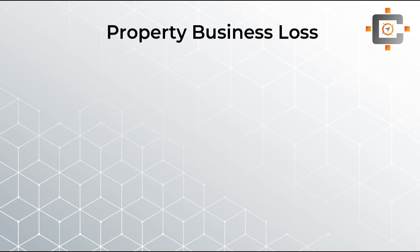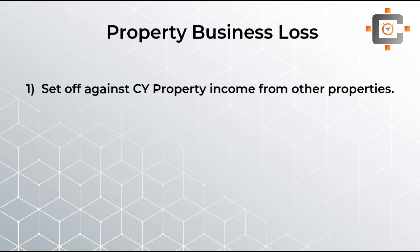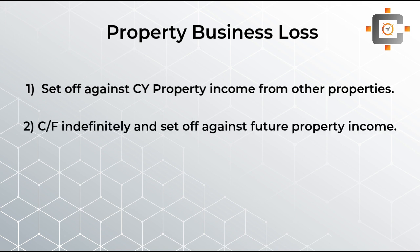Now let's come to the property business loss. If you are having a property business loss, the first priority should be to set off your property losses against the current year property income from other properties. For example, if you have five properties and incur a loss from one or two, set it off against the profit from the other three or four. If you cannot, then the second option is to carry forward the loss for future profits indefinitely.